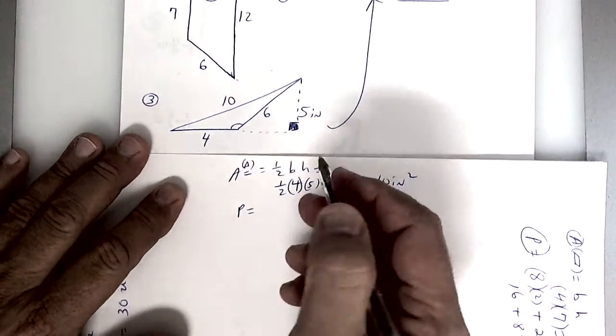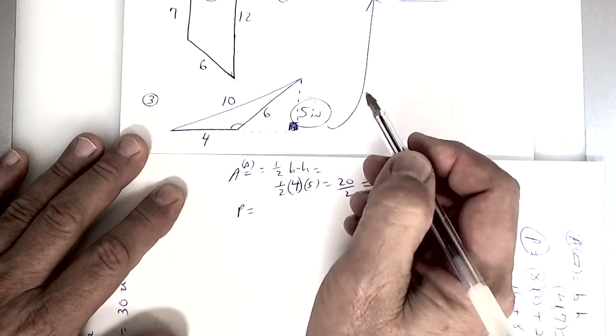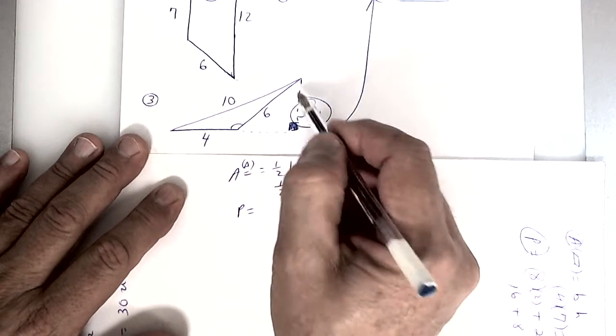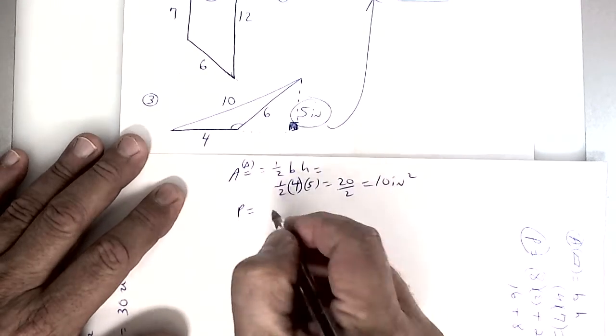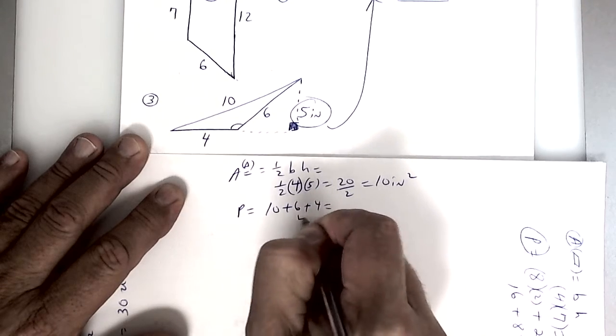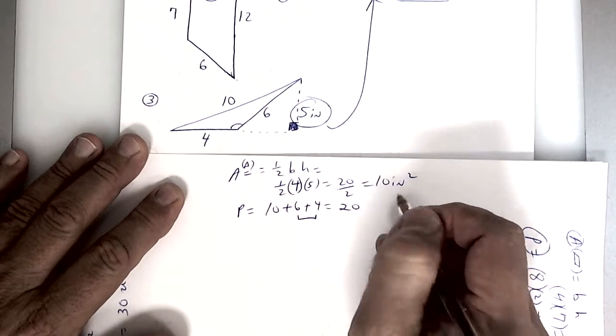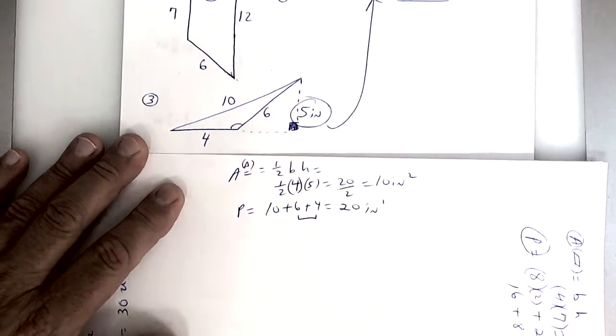Make sure you color that box in. To find perimeter you're going to add up the sides. Do not add up that 5 because that's only the height of the triangle. So you're going to add up 10, 6, and 4. So this is 10 plus 10 more makes 20. So it's going to be 20 inches to the first power.